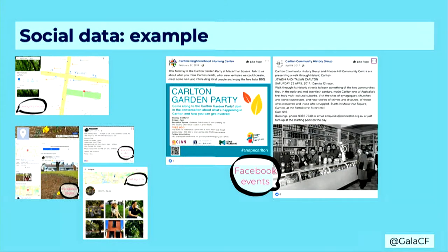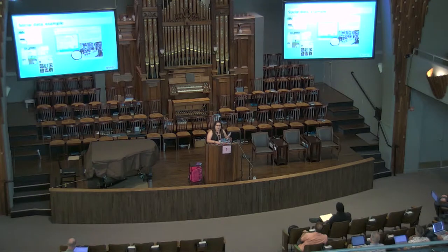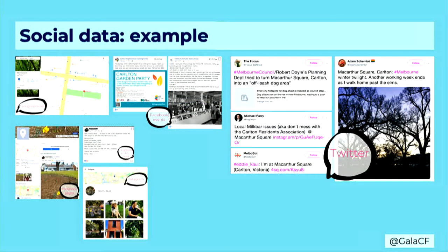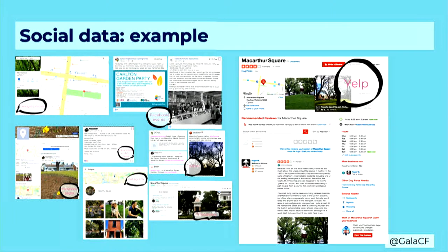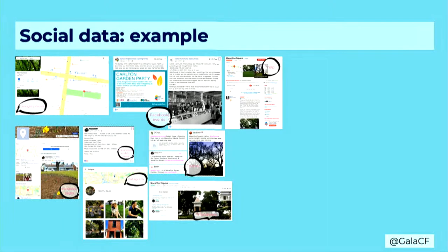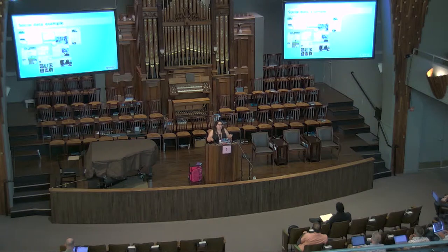In the Instagram feed, I can not only see the pop-up museum — the images on the left — but I can see that there are dogs and that people like the buildings. One of the things I can see is that people really like photographing the trees. From Facebook events — and nothing to stop us from using Meetup or Eventbrite — I can see there's some historical meaning to this place. From Twitter, people got angry about it being an off-leash dog park. And from Yelp and TripAdvisor, it says there are some historical buildings in the area. We've queried all these different platforms and learned so much about that place — information that would be really hard to get any other way.